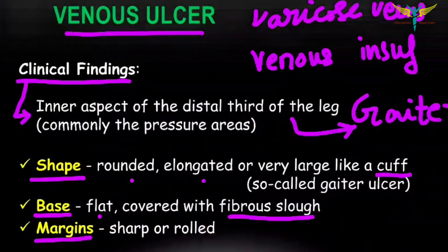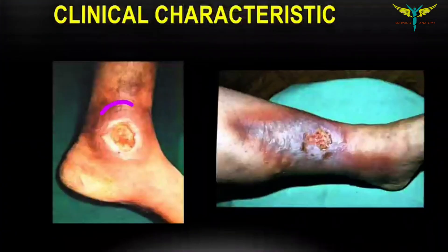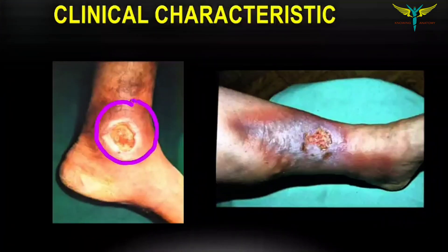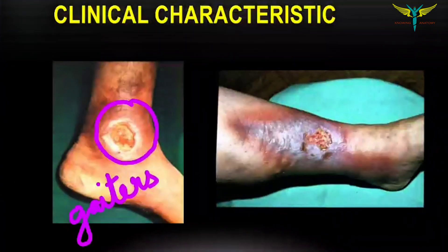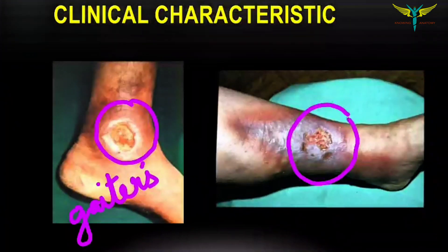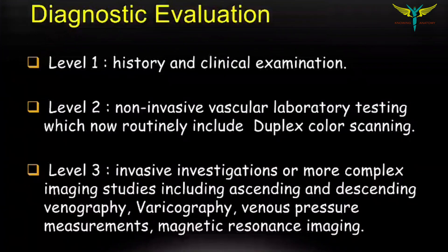The margins of venous ulcer are sharp or rolled out. This area of the medial malleolus is the most common area for the occurrence of venous ulcers, and here you can note a venous ulcer on the shin.